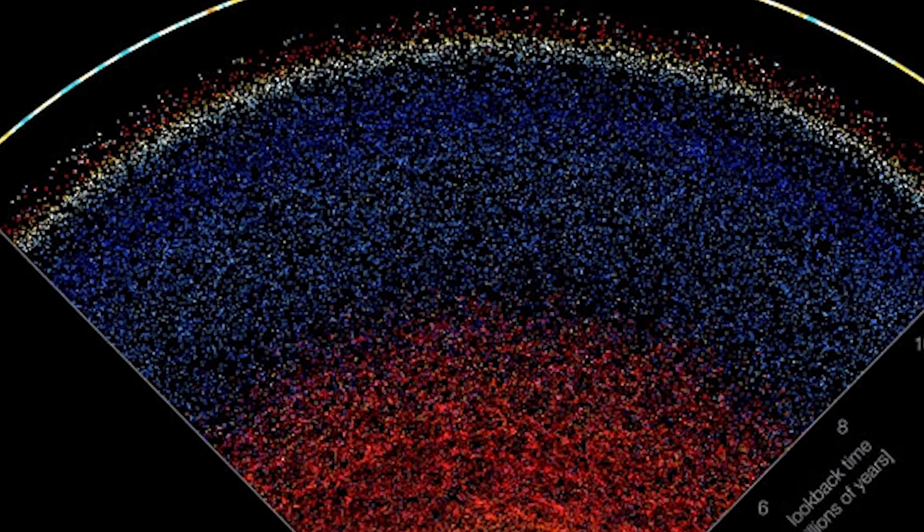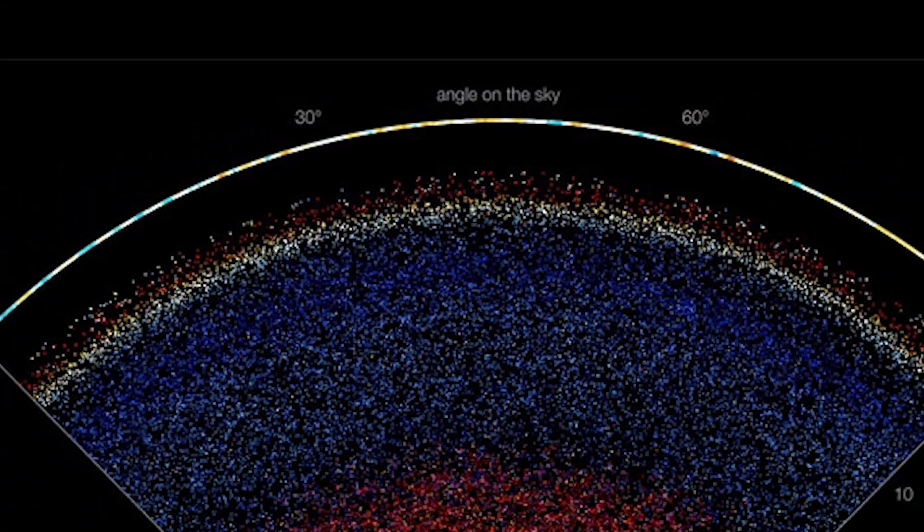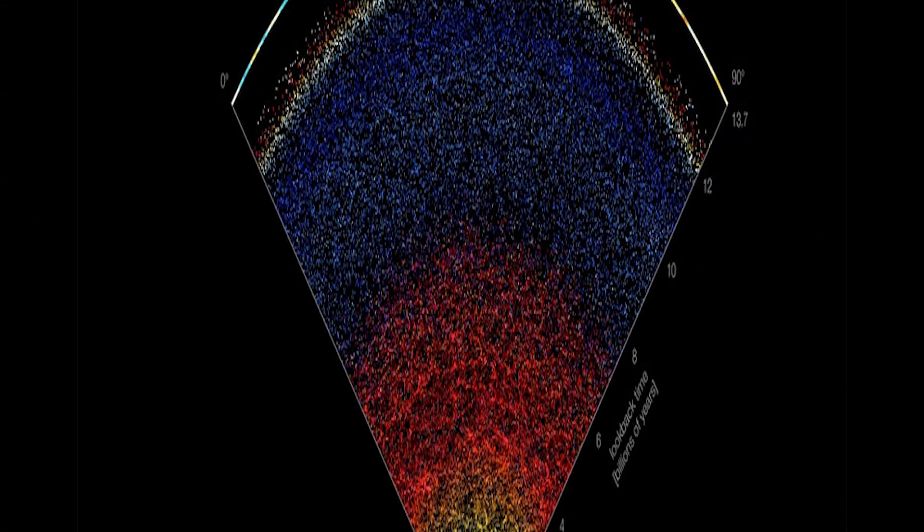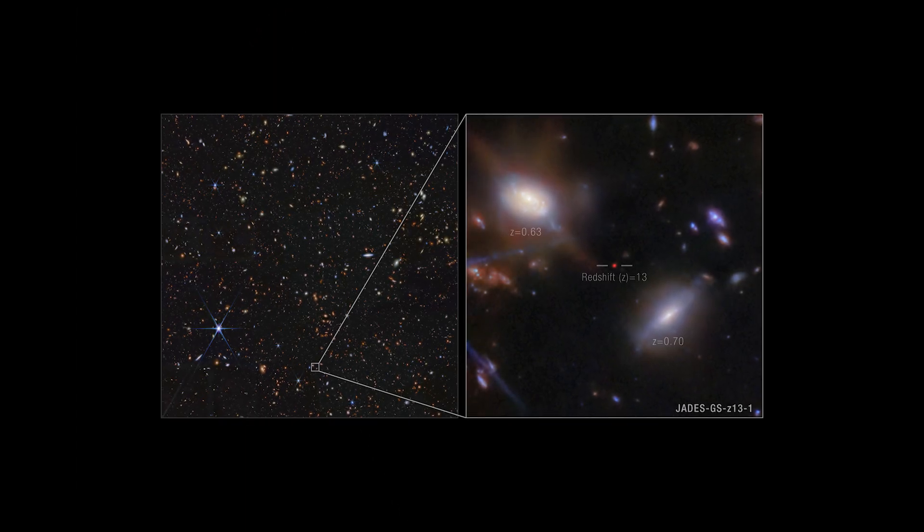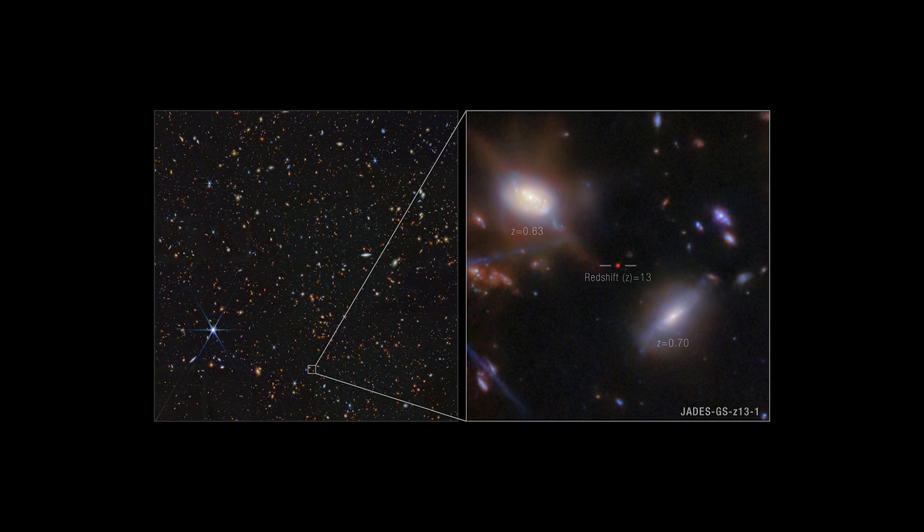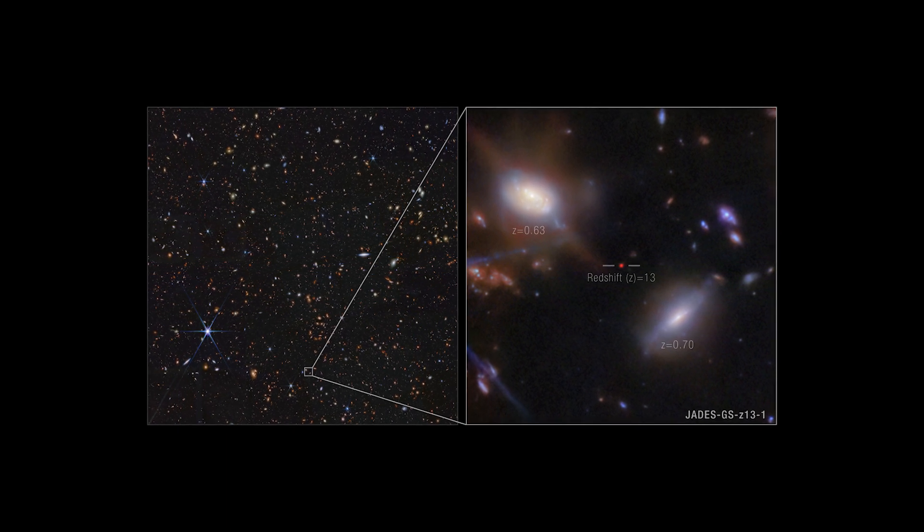As light travels toward us from the farthest galaxies, the universe itself is stretching. Those galaxies have been racing away from us for billions and billions of years. And by the time their light finally reaches us, they're far beyond where they started.